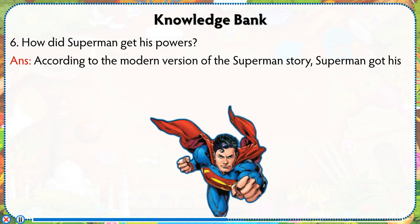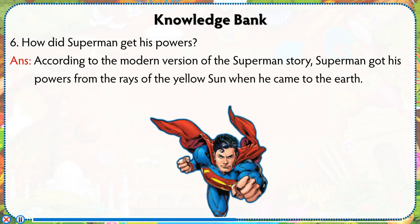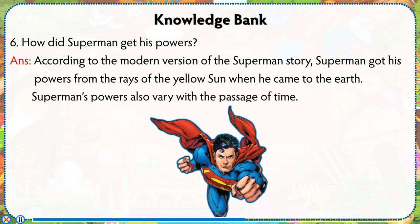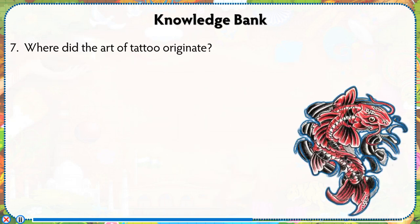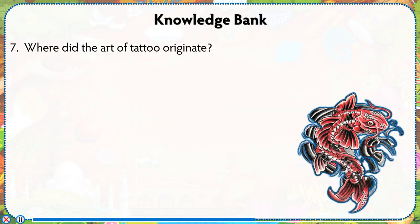How did Superman get his powers? According to the modern version of the Superman story, Superman got his powers from the rays of the yellow sun when he came to the earth. Superman's powers also vary with the passage of time.